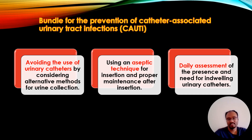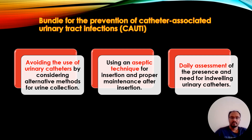The bundle for the prevention of catheter-associated urinary tract infection includes: avoiding the use of urinary catheters by considering alternative methods for urine collection, using aseptic technique for insertion and proper maintenance after insertion, and daily assessment of the presence and need for indwelling urinary catheters.